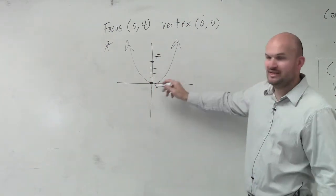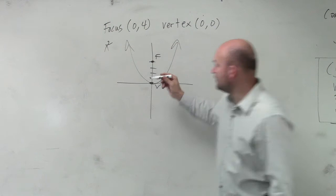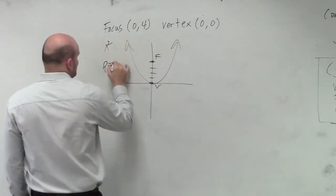Right? So we can even count. We can see 1, 2, 3, 4. p is equal to 4.